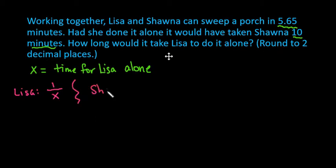For Shauna, if she were to do the whole job it would take her 10 minutes. That means that she does 1 tenth of the job each minute if she's working at a constant rate. And then together it took 5.65 minutes. So we would set it up this way.